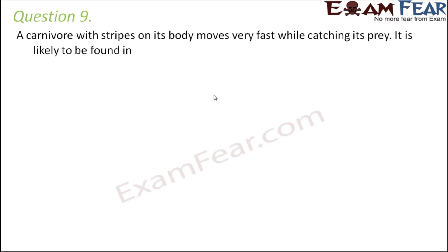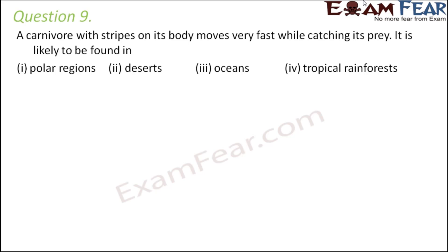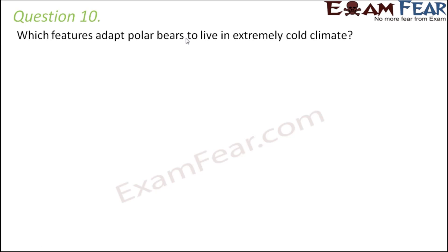Question number nine: a carnivore with stripes on its body moves very fast while catching its prey. It is likely to be found in — polar regions, deserts, oceans, or tropical rainforests? The answer is tropical rainforests. You can imagine a cheetah or leopard — stripes on the body help it blend with the background color, and it moves very fast to catch its prey. So it is found in tropical rainforests.